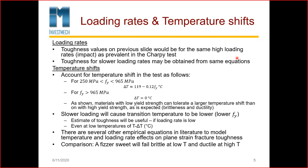For temperature shifts, to account for temperature, materials between 250 MPa and 965 MPa yield strength are taken into account with a delta T equation. Delta T is 190 minus a yield-strength-dependent factor, and otherwise it equals 0 degrees Celsius. Materials with a low yield strength can tolerate a larger temperature shift than one with high yield strength, as expected because of brittleness. Slower loading will cause the transition temperature to be lower, and the estimate of toughness will be useful even at low temperatures.